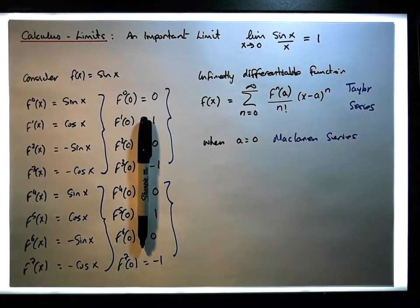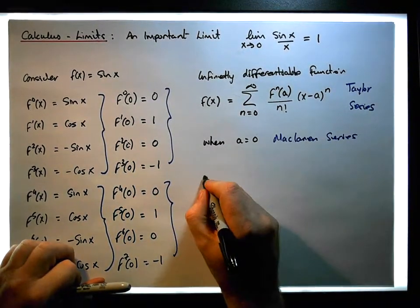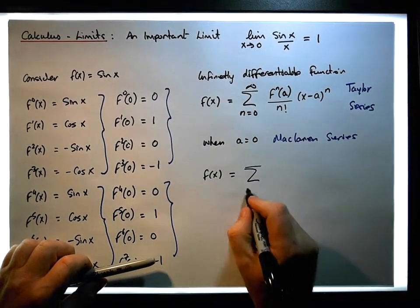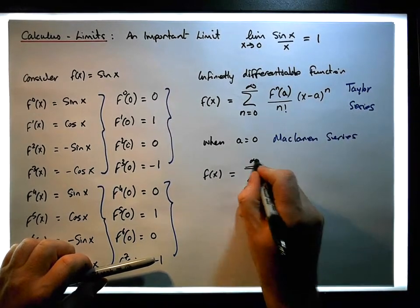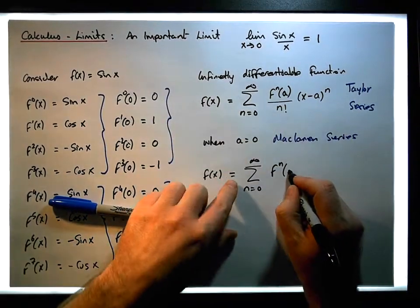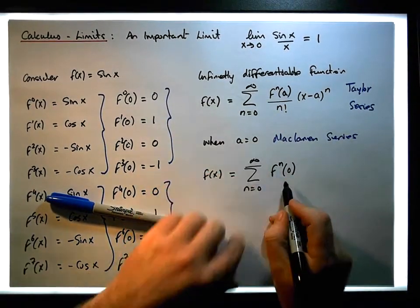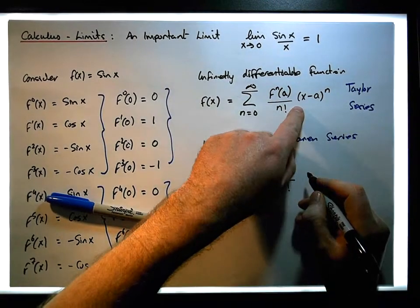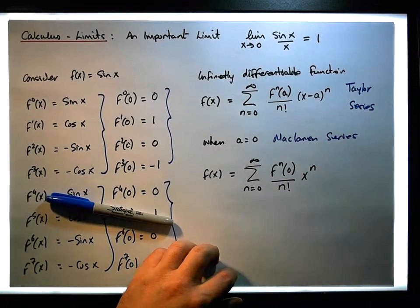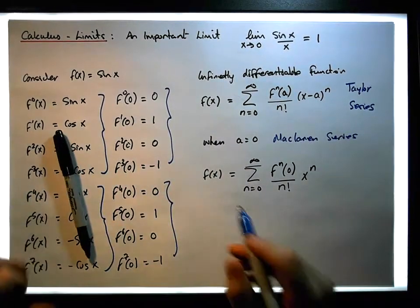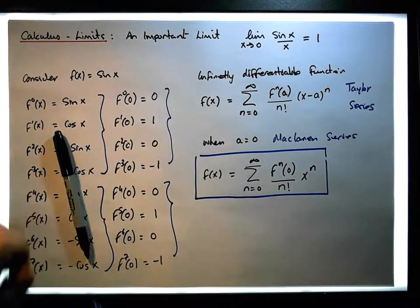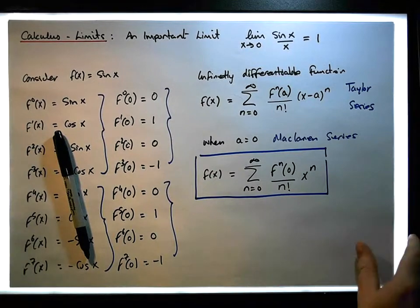So in this particular situation, the Maclaurin series is effectively f of x equals the infinite summation from n equals 0 to infinity of the n-th derivative of our function estimated at 0, all over n factorial times x to the power of n. We're going to apply this Maclaurin series to the function sin(x) to see what we get.